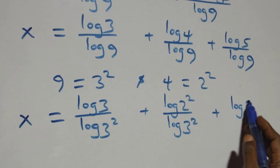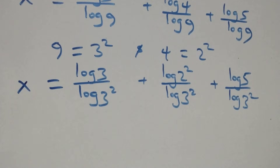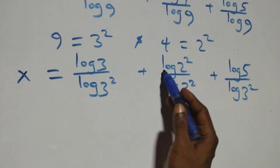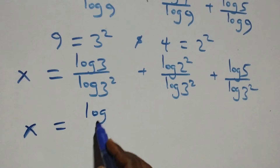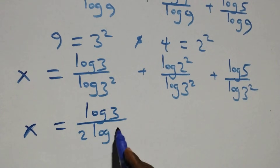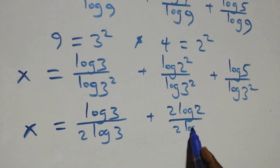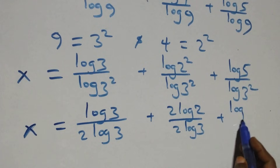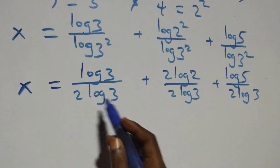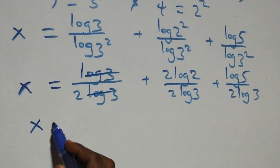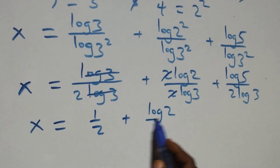Plus log 5 over log(3²). We apply the power rule of logarithms: 2 comes down in each term. We have x equals log 3 over 2 log 3 plus 2 log 2 over 2 log 3 plus log 5 over 2 log 3. Log 3 cancels, giving x equals 1/2 plus log 2 over log 3 plus log 5 over log 3.